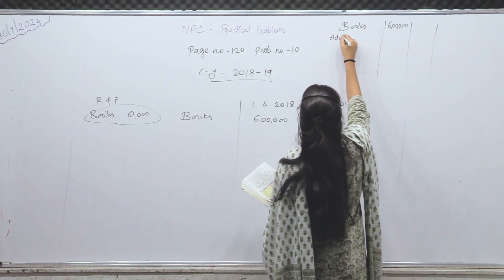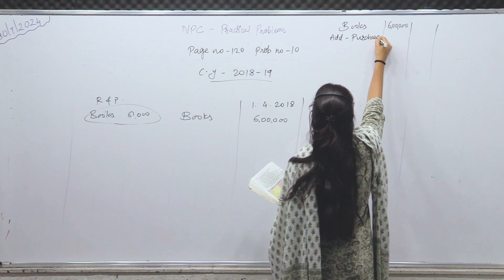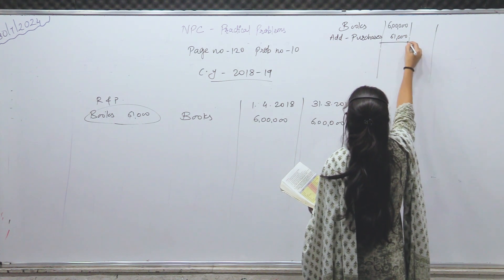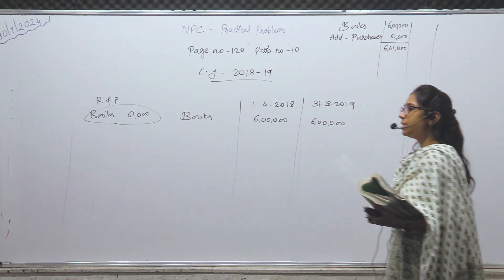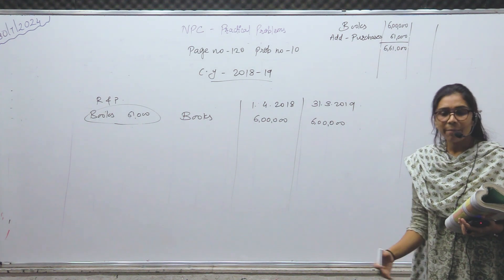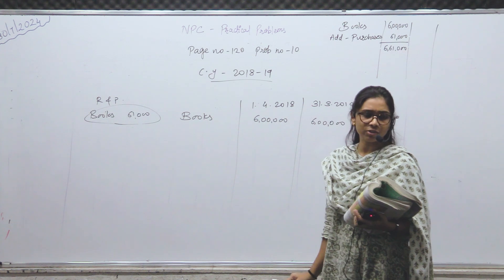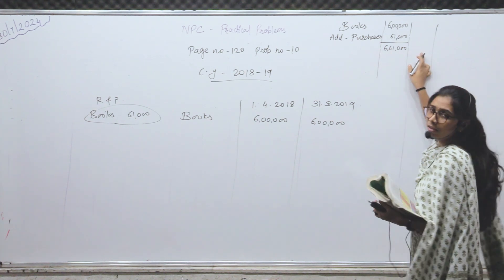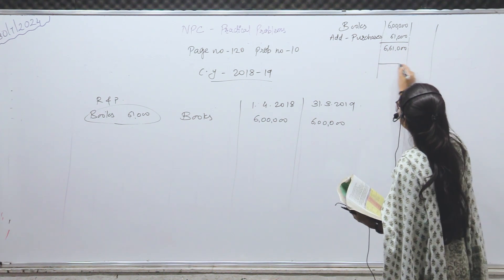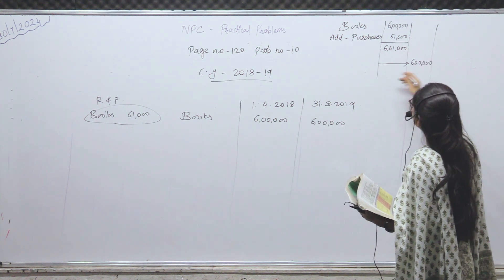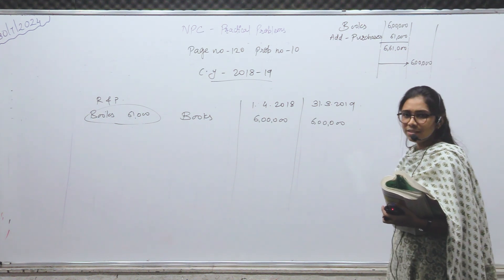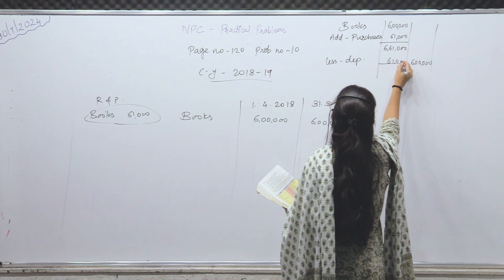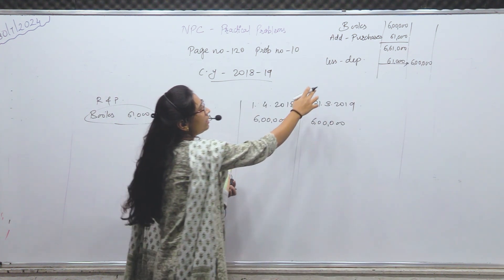पहले 6,00,000 के books थे, उसमें और books purchase किये — add purchases — 61,000 के purchase किये। तो अपने पास कितने के books हो गए? 6,61,000. Books we have to give the end balance — 31st March 2019 closing balance — where do you have to show in the outer? Closing balance in the outer — how much balance? 6,00,000।